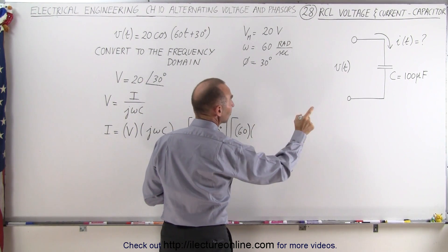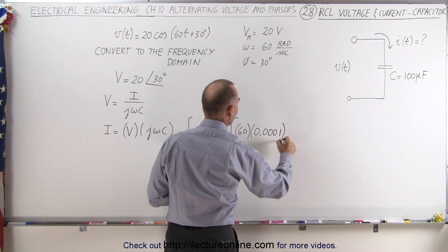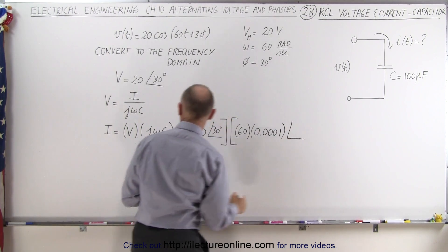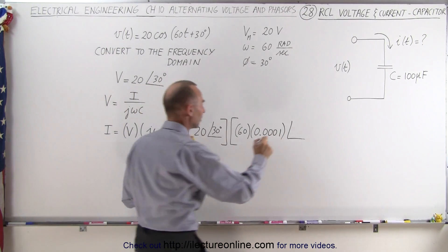And c is 100 microfarads, which is 0.0001 farad. And then we have a phase angle of j, that would be positive j, positive j that would be a plus 90 degrees.